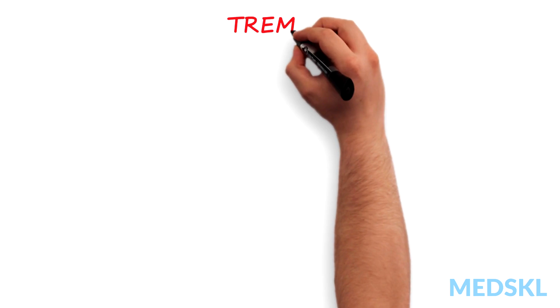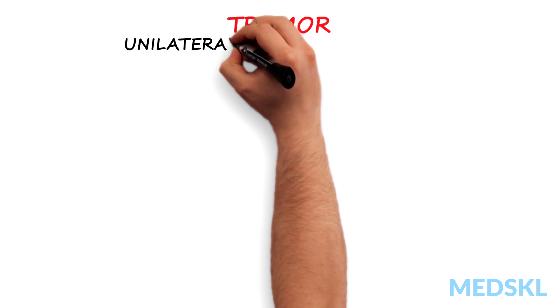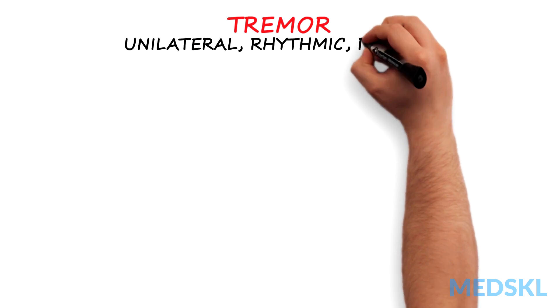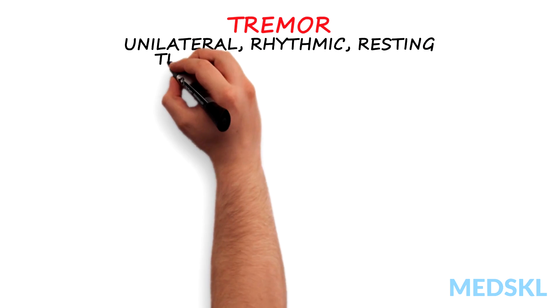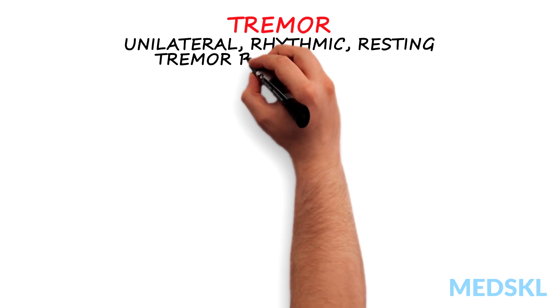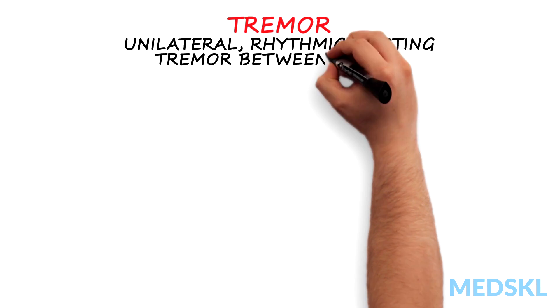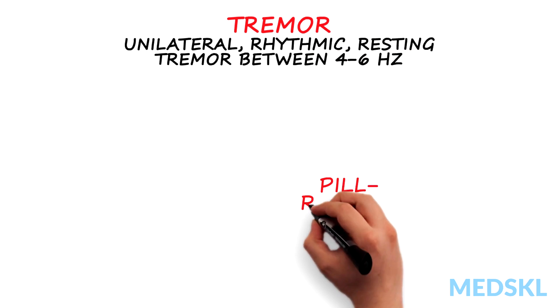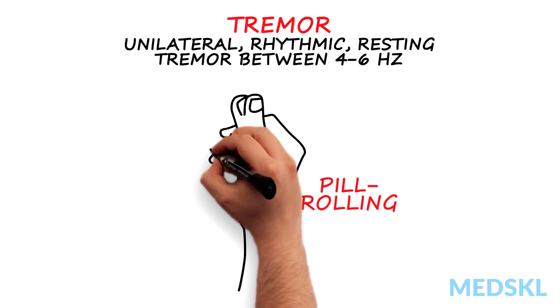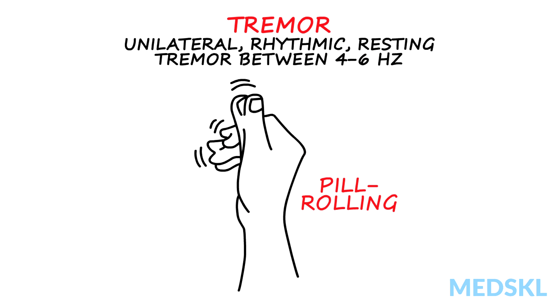The tremor in PD is typically a unilateral, rhythmic, resting tremor between 4 to 6 hertz, and can classically start as a pill-rolling tremor of the thumb and forefinger.